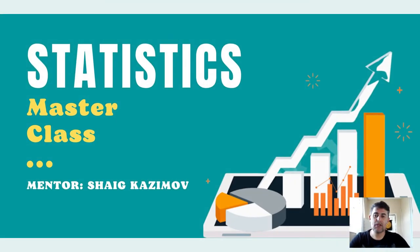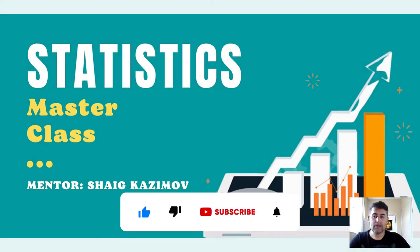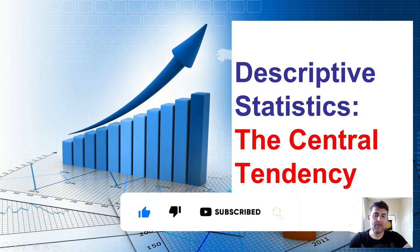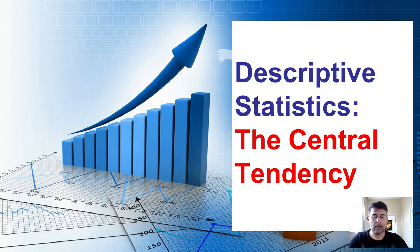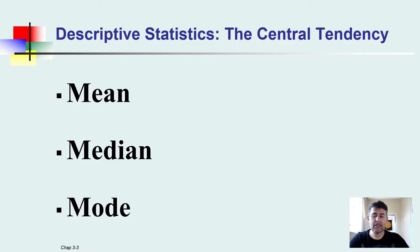Hello friends, we continue to learn statistics — business statistics — and today we are going to learn descriptive statistics. This is central tendency. The data we obtain are the empirical results, and all this data has central points. These central points always tell us something about the data. This central tendency always helps us make a conclusion about the data, and therefore this measurement is very essential and urgent in statistics.